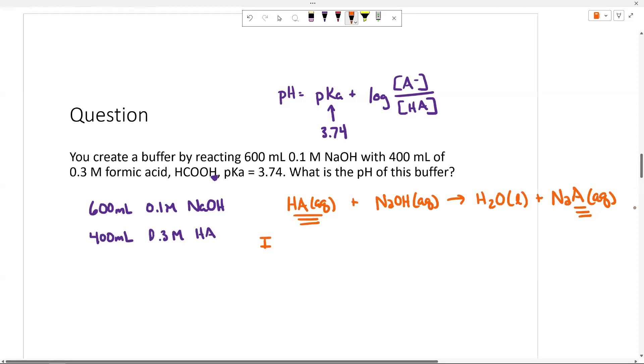Okay, ICE table. If we want to know specifically how much of our conjugate base and how much of our acid we have, we've got to know what we started with. So 0.4 liters times 0.3 molar, I have 0.12 moles right here. 0.6 times 0.1, I have 0.06 moles. And in this case, I'm not starting with any of my conjugate. But I know neutralization reactions, I expect them to go to completion. So minus 0.06, it's the limiting reactant, plus 0.06.